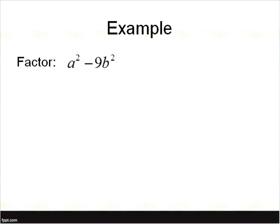We're going to get a little quicker at this. You should recognize when you see a difference of squares — it'll have two terms, a subtraction, and a perfect square minus a perfect square. Whenever you see that, write out your parentheses: square root of the first term minus the square root of the second term, times the square root of the first term plus the square root of the second term. Square root of a squared is a; square root of 9b squared is 3b. Done.